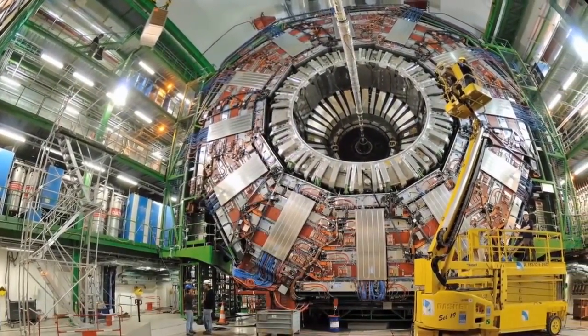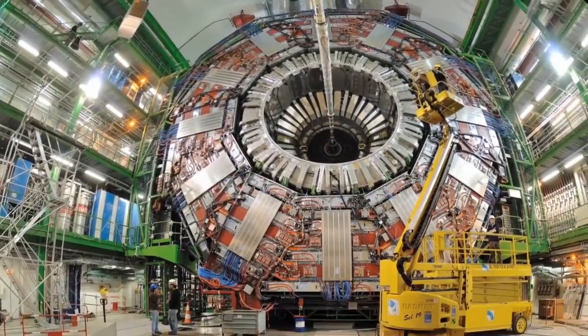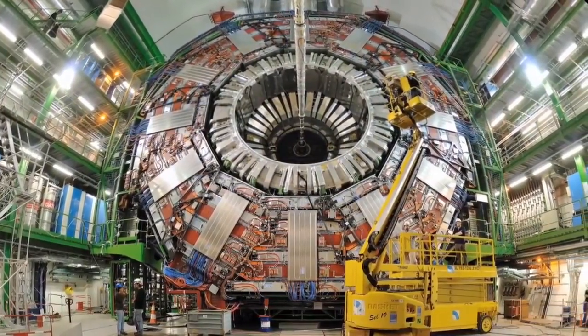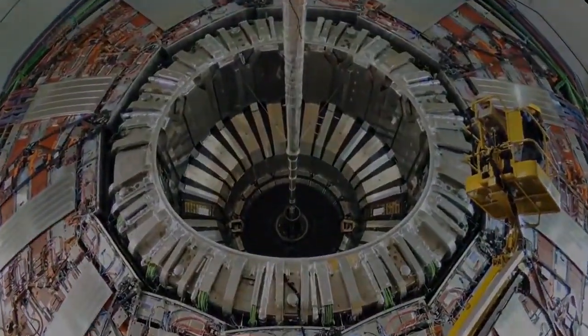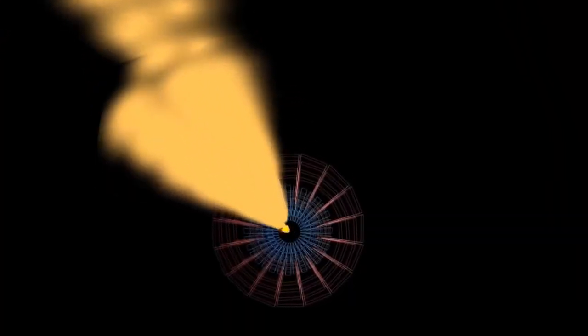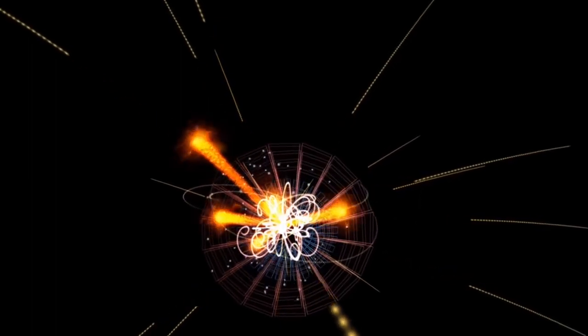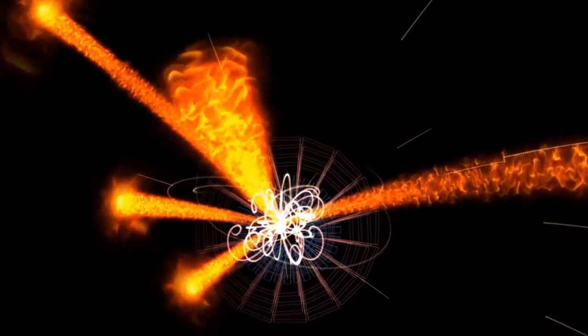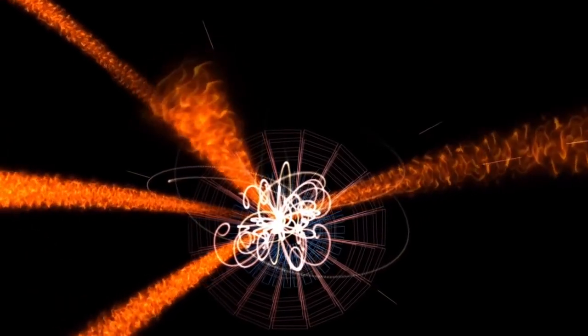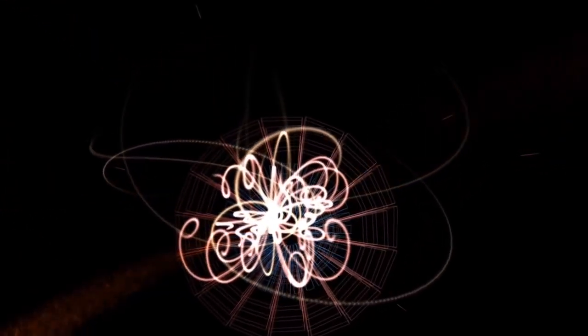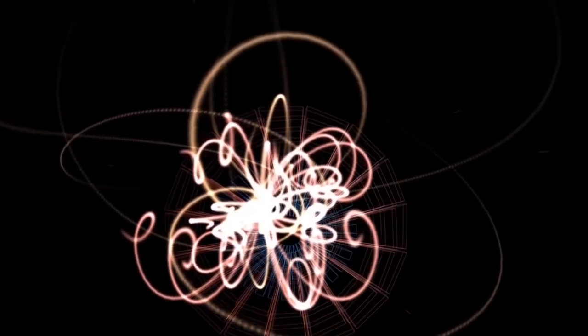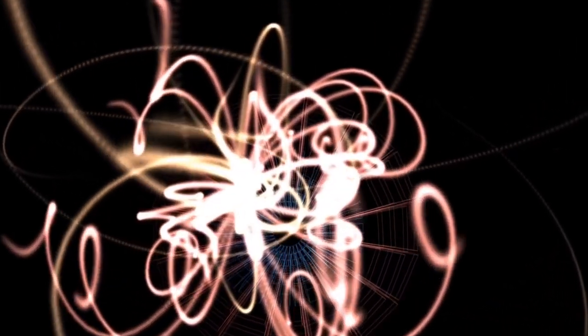The Large Hadron Collider lies in a tunnel below the border between France and Switzerland. A magnetic field 100,000 times stronger than Earth's bends the paths of charged particles emerging from high-energy collisions. The curved tracks of these particles reveal their mass, charge, and energy.